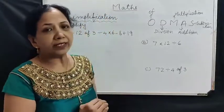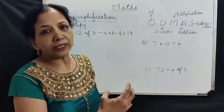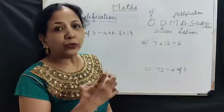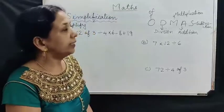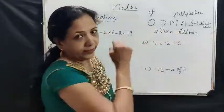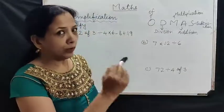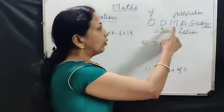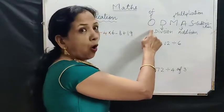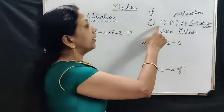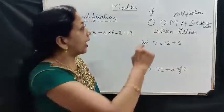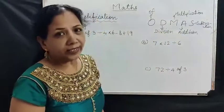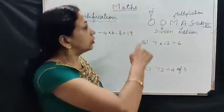In simplification, different types of operations are given, so there are some rules about which one we have to do first. For that, here is ODMAS — taught from 5th to 6th onwards. ODMAS means: O means 'of', D means division, M means multiplication, A means addition, S means subtraction.